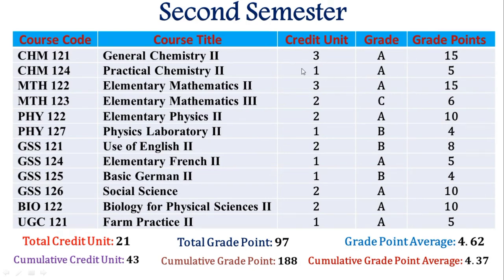You add all the grade points and all the credit units, then divide your cumulative grade points by your cumulative credit units — and that gives you the correct CGPA, whether it's for 4, 5, or 8 semesters. That's what I wanted to share in this video. Kindly subscribe to our YouTube channel, give a thumbs up, and share with your friends and colleagues. See you in our next video!